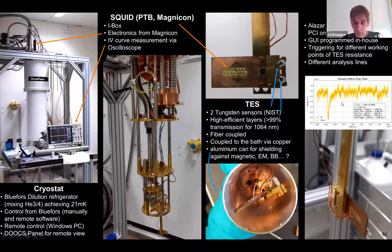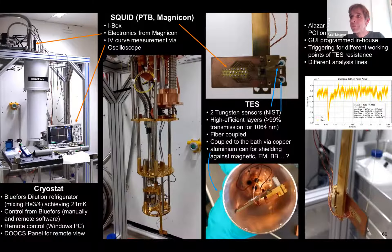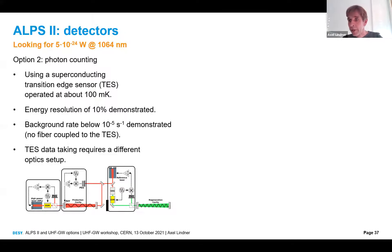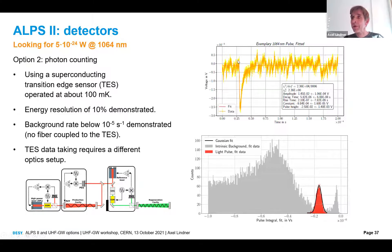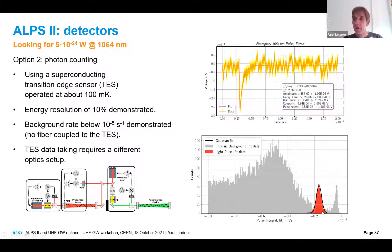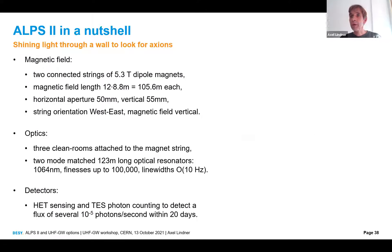We have joined forces with Cardiff, Glasgow, and others to push this transition edge sensor technology further. This photon counting approach also requires modifications to the optical setup. We can measure the energy of photons to better than 10% accuracy by integrating the pulse area. We have also demonstrated very low background — with background distributions showing electronic noise in one peak and our 1064-nanometer photon signal clearly resolved in a separate peak.